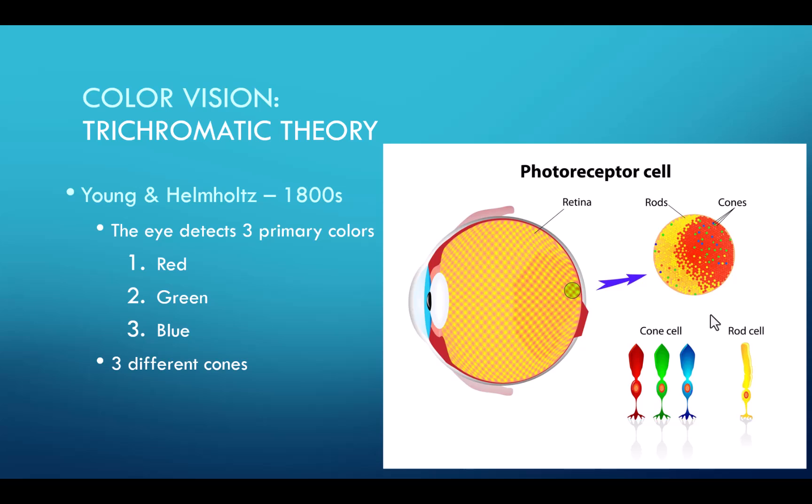And here's just a different diagram that shows the same thing in a different way. Again, showing here the light comes in through the lens, is detected by the photoreceptors in the retina in the back of the eye. We have our cones that detect the color, showing there's red, blue, and green cones. And the rods are yellow.